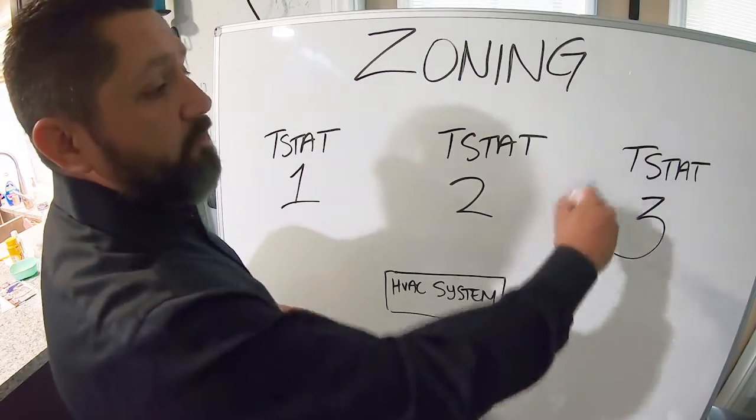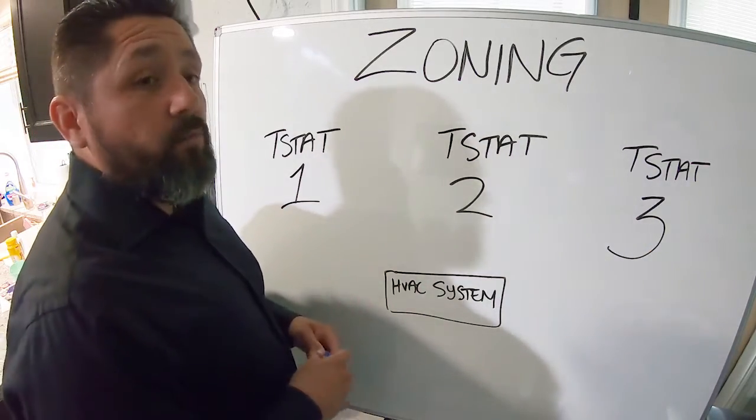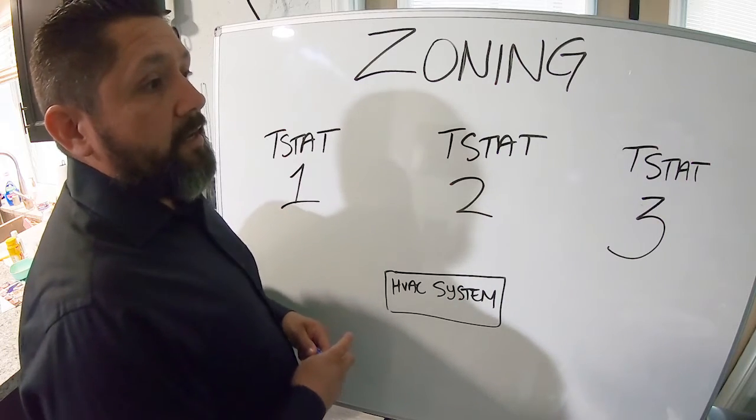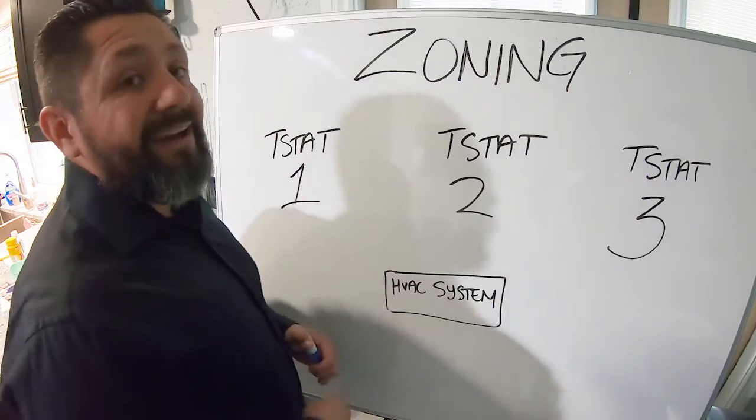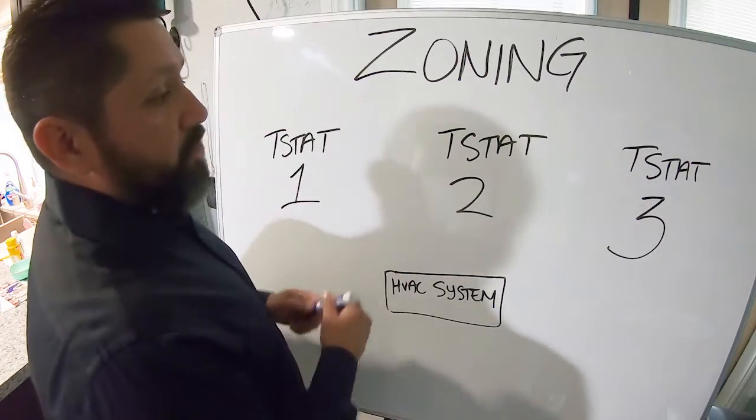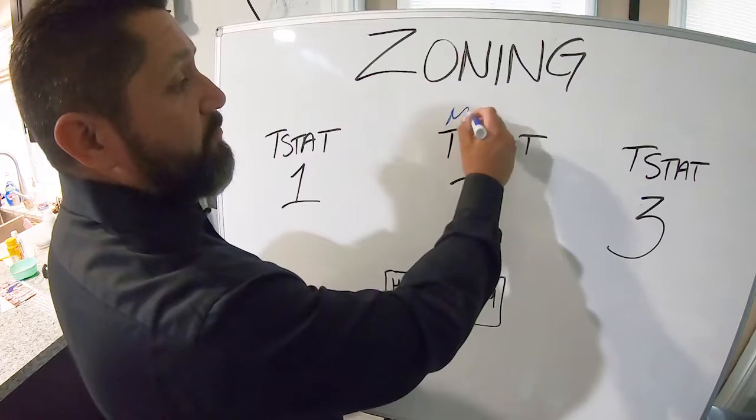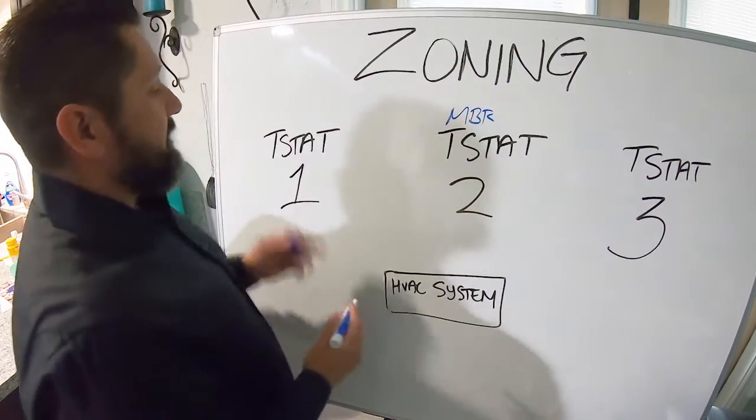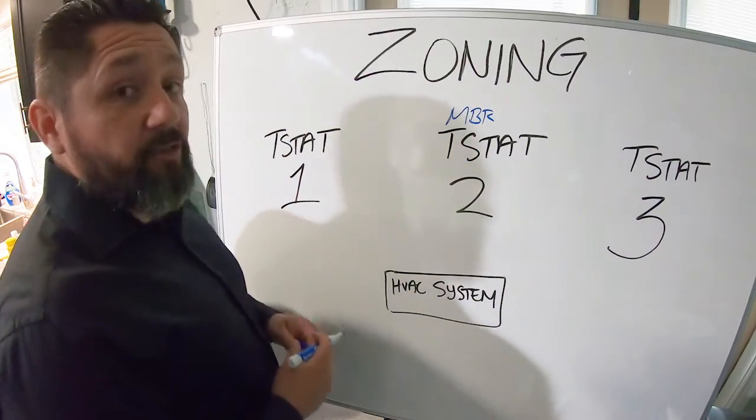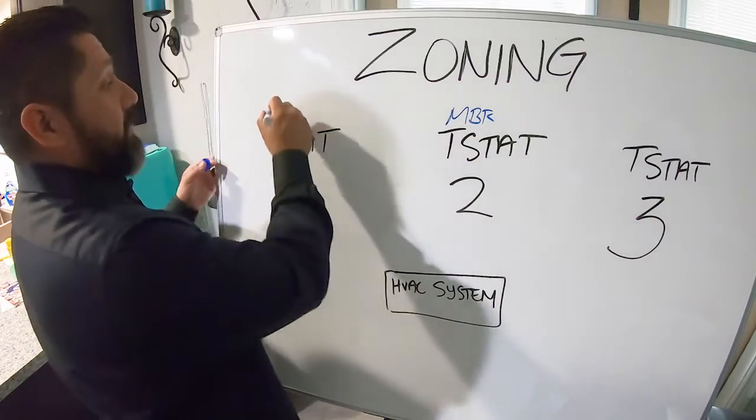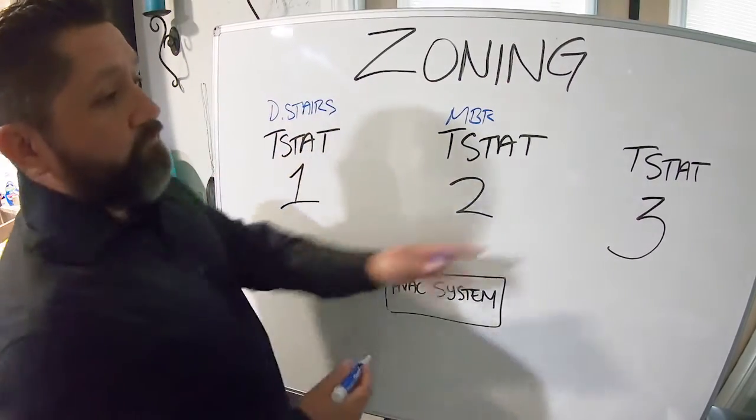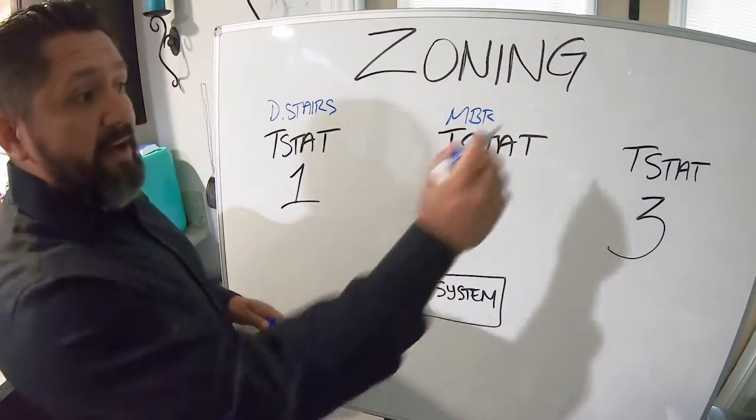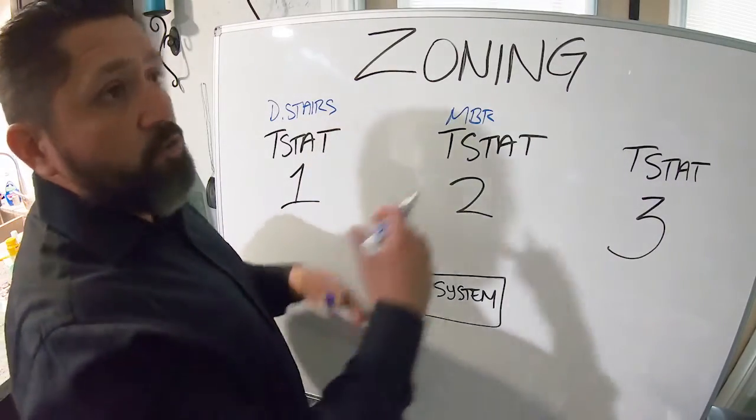So say if you wanted one thermostat in your master bedroom, just your master bedroom, so you can keep it an icebox if you want. So now we'll turn that into thermostat two. Thermostat two becomes your master bedroom. Let's say you only wanted thermostat one for downstairs, just for downstairs. So now this is just for downstairs. And then you got thermostat three, I want that thermostat to be the rest of the bedrooms for upstairs. Okay, so this is the rest of upstairs.